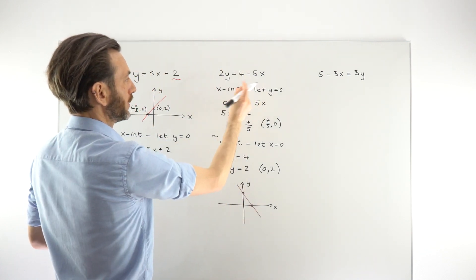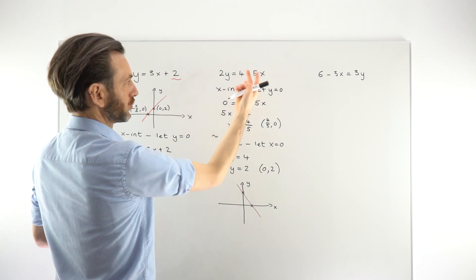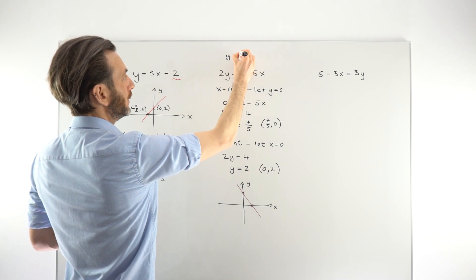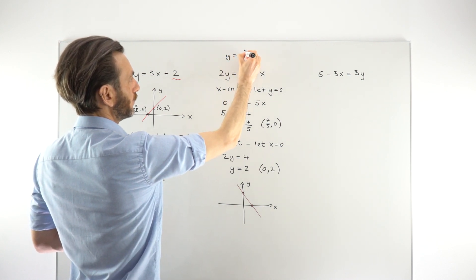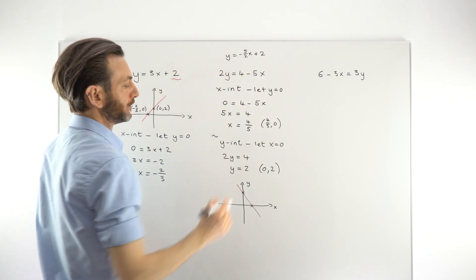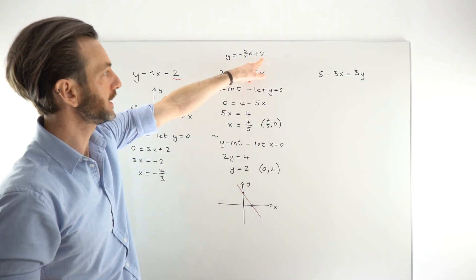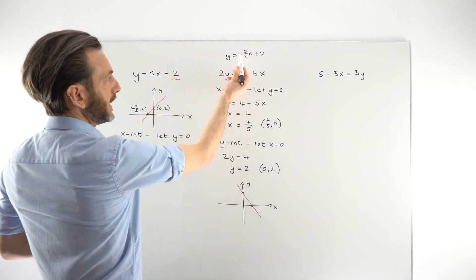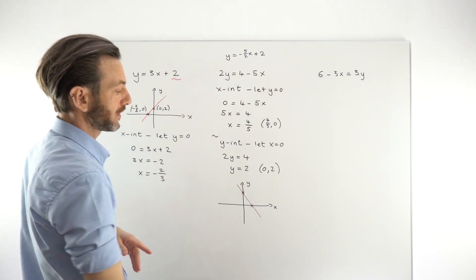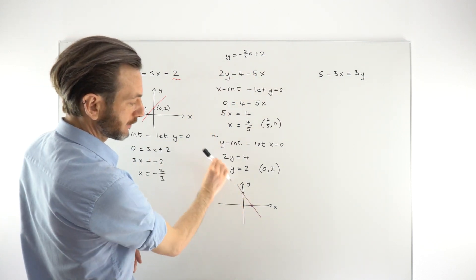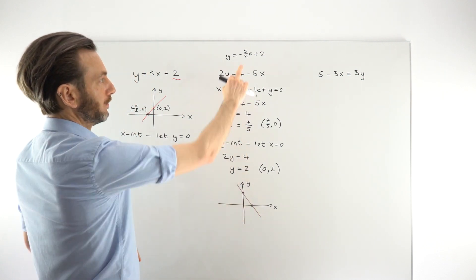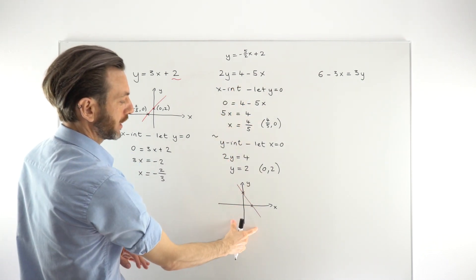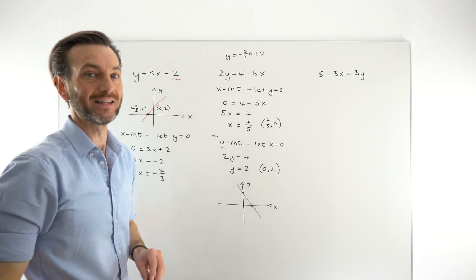We can check by rearranging the formula into y equals mx plus c format, which gives us y equals minus 5 over 2 times x plus 2. The plus 2 y-intercept is confirmed. The gradient minus 5/2, which is minus 2.5, fits perfectly — a negative, fairly steep gradient. You can always verify by sketching and rearranging the formula.